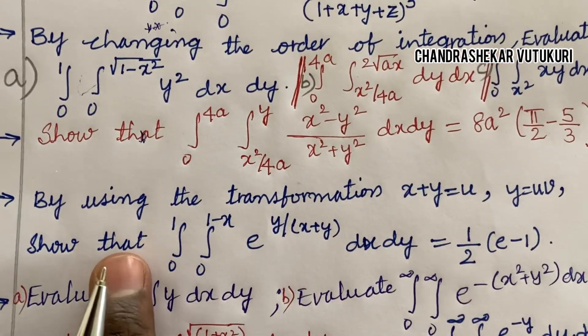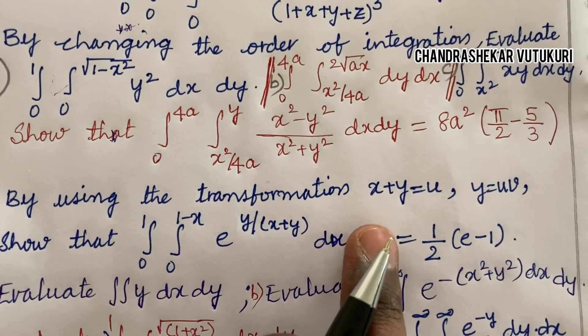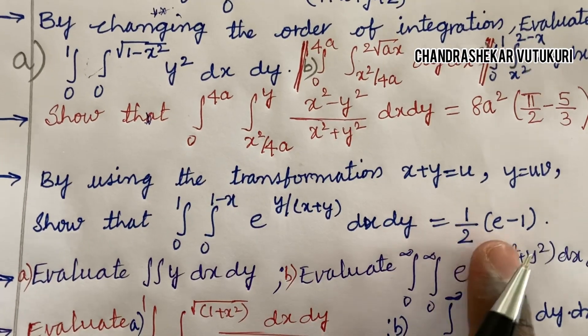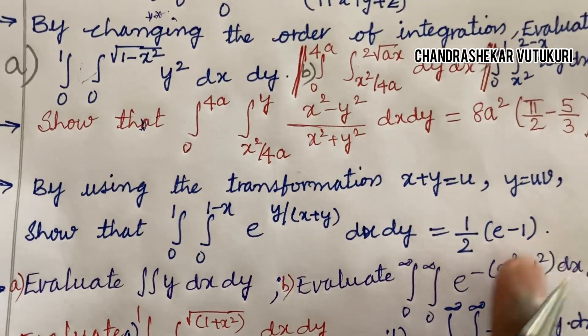There are certain short questions also. By using the transformation x+y=u, y=uv, show that such double integration equals e/2 minus 1, dear students.